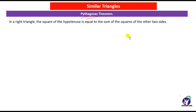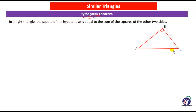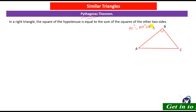The given information is a triangle ABC right-angled at B. We have to prove that the square of the hypotenuse AC is equal to the sum of the squares of the other two sides, BC and AB. This is what we have to prove.